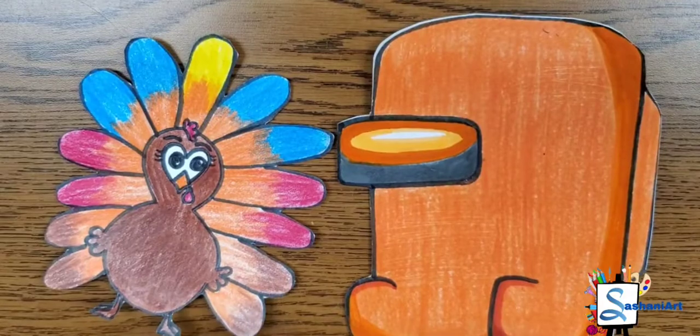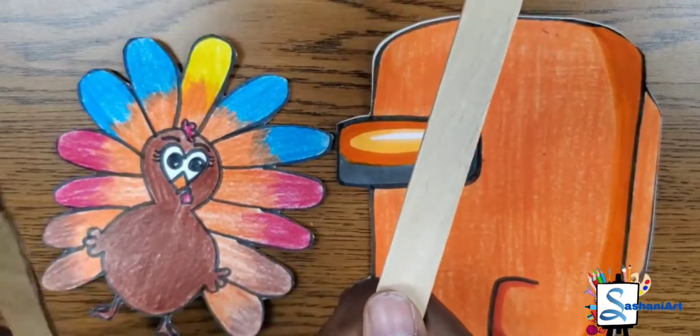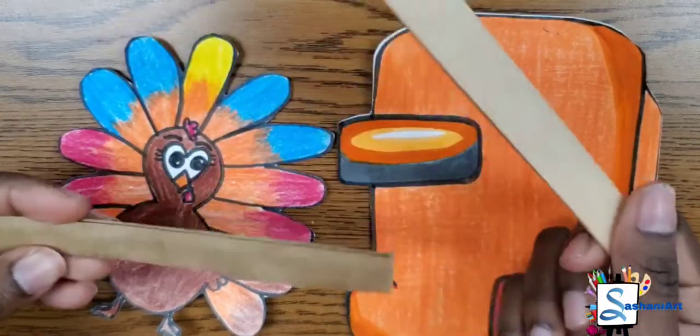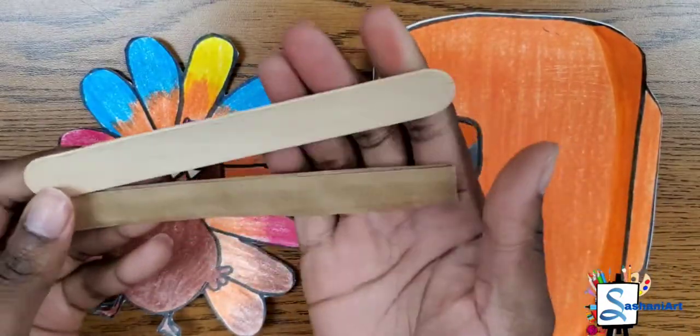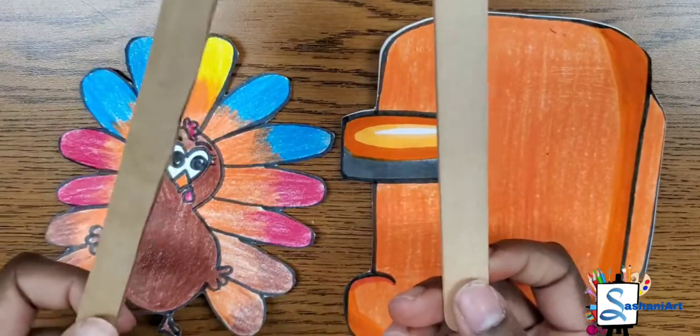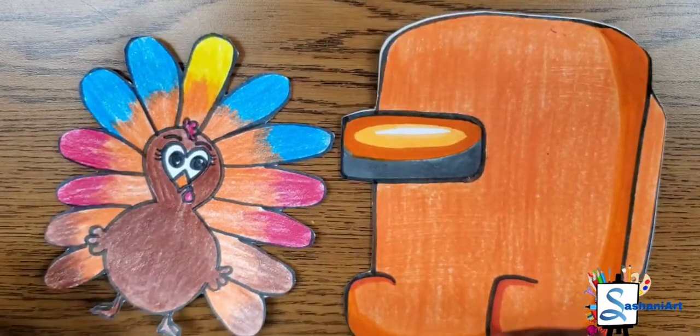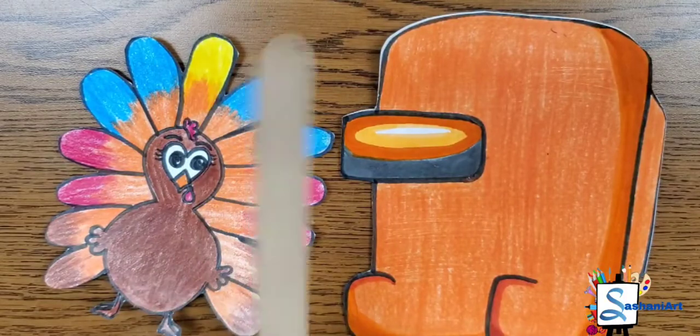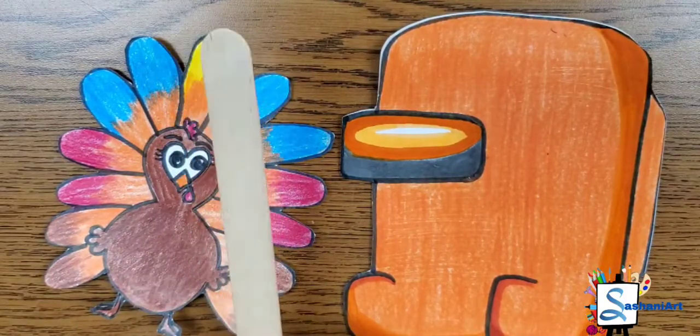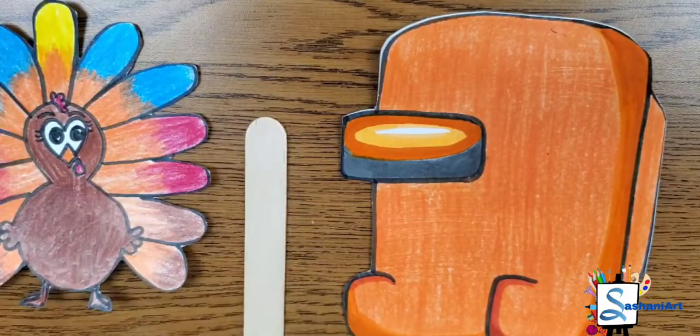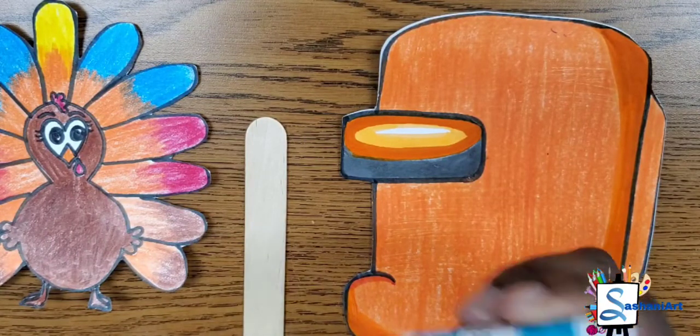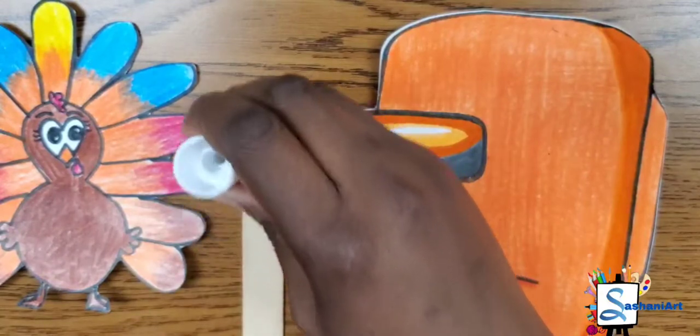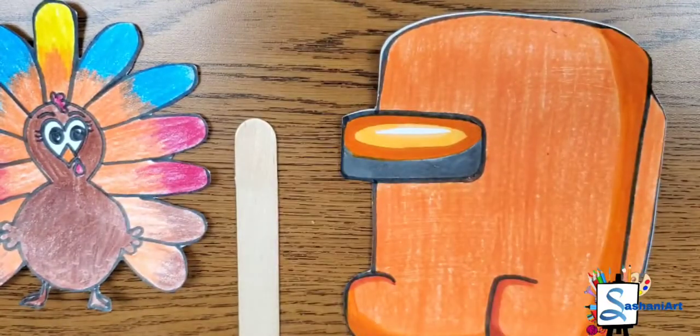Now that we are all done cutting out our peacock, you are going to need a popsicle stick or a small piece of cardboard if you don't have a popsicle stick. Just a small piece that we are going to glue our peacock on so that it can pop up inside of our Among Us character. I am going to use my popsicle stick. You are going to use your glue to apply the glue to the popsicle stick, and then you are going to stick your peacock on it at the top of your popsicle stick.